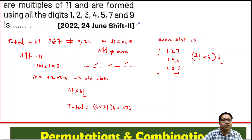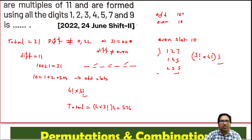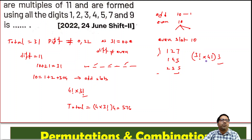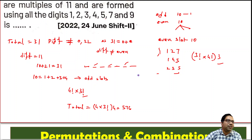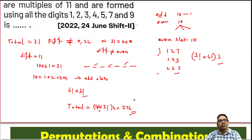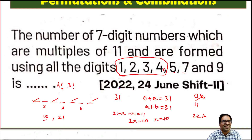In total, we have two scenarios: odd slots summing to 10 gives 1 × 4! × 3! arrangements, and even slots summing to 10 gives 3 × 3! × 4! arrangements. The total is 4 × 4! × 3! = 4 × 24 × 6 = 576. That is the correct answer.